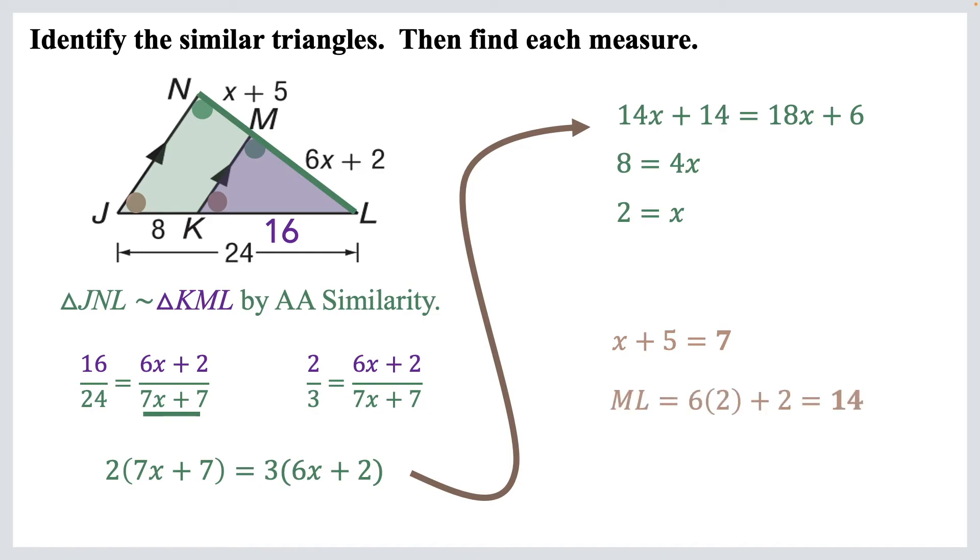And then we know that ML, this side here, is 6 times 2 plus 2, so just plug in the X, we know that's 14. So together, the big side of that triangle is 7 plus 14, which is 21. Okay, we're done with that one.